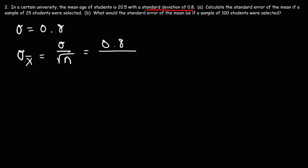And in part A, we chose a sample size of 25. So n is 25. Now the square root of 25 is 5. So 0.8 divided by 5 will give us a standard error of 0.16. So that's the answer for part A.